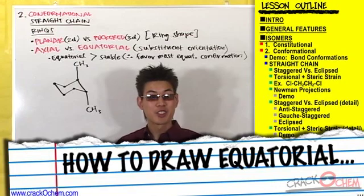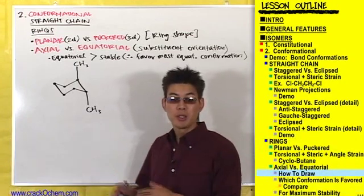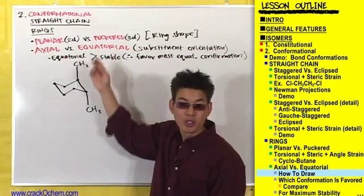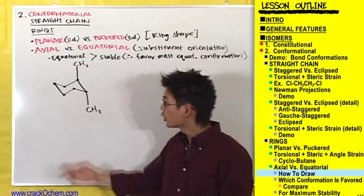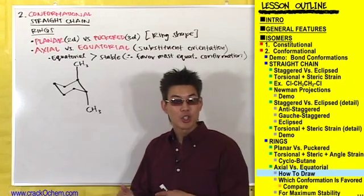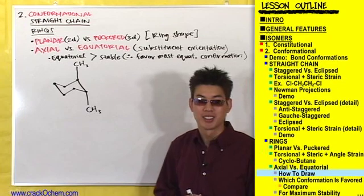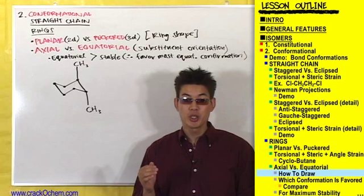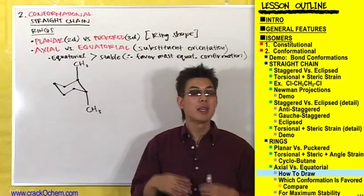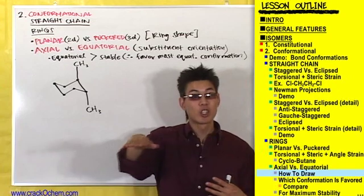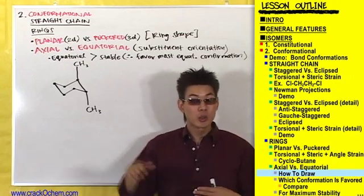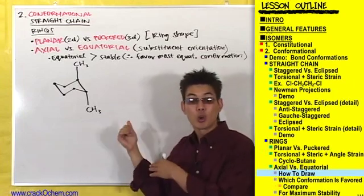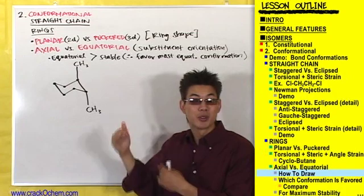But this is only half the story, because a substituent can be in one of two conformations: it can either be axial or it can be equatorial. We just saw how to draw axial substituents. Now let's see how to draw equatorial substituents. Equatorial substituents don't point straight up or straight down — they point horizontally. They're called equatorial, like the equator, which runs horizontally across the Earth.